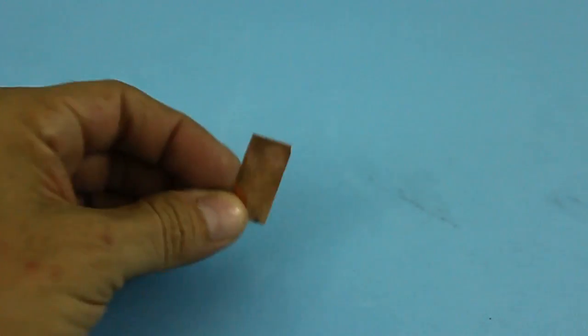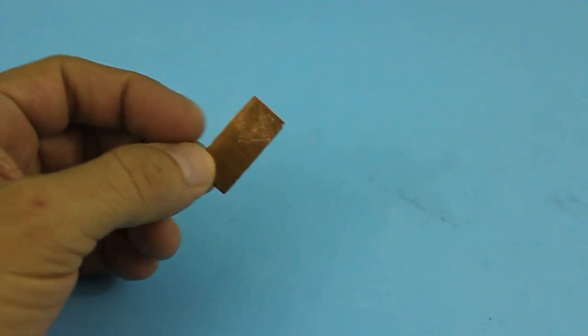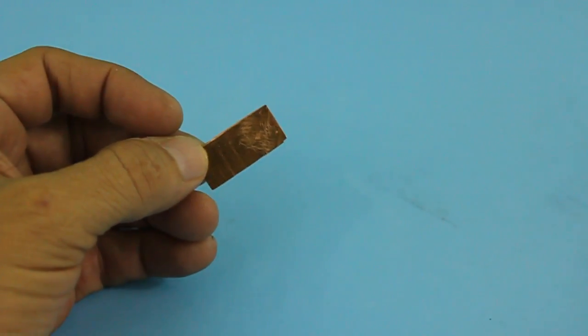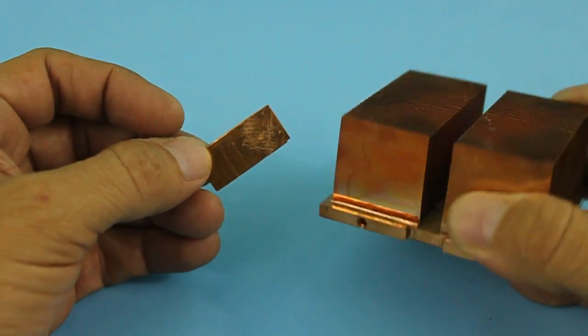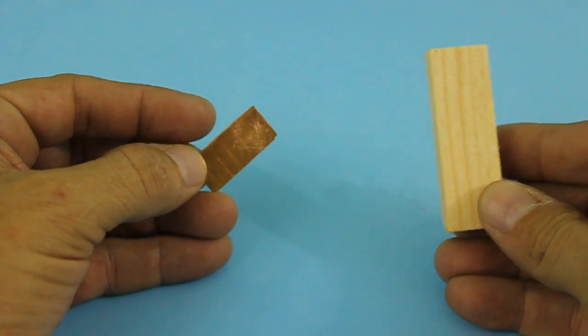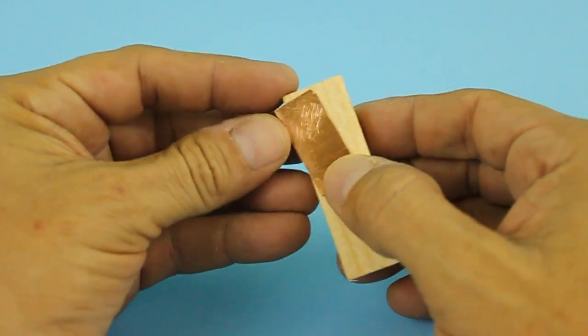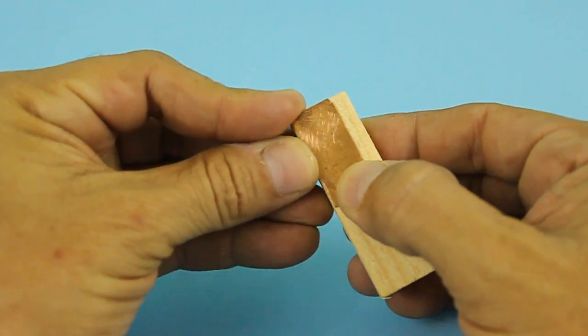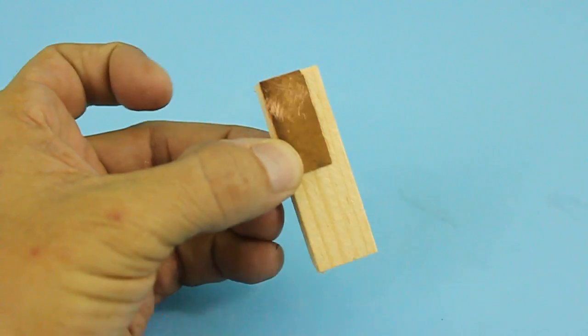The first thing we need is a piece of copper. I took mine from an old computer heatsink and we also need a piece of wood. We need to glue the copper to the wood in this way.